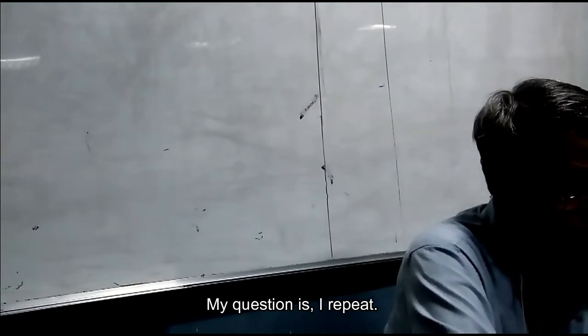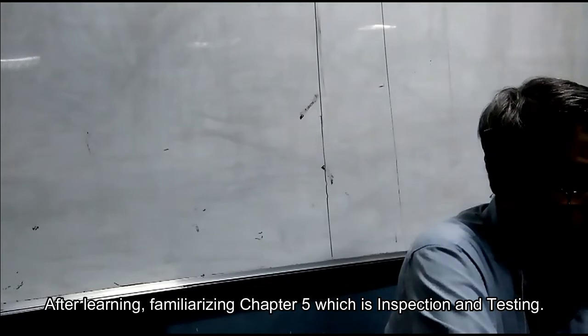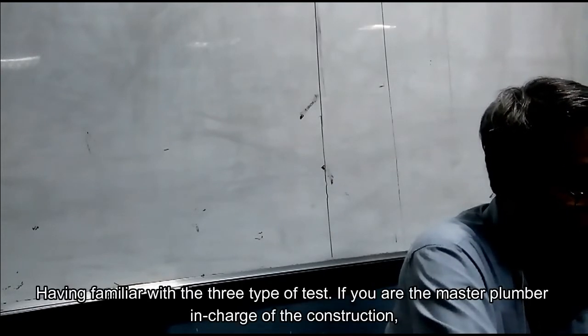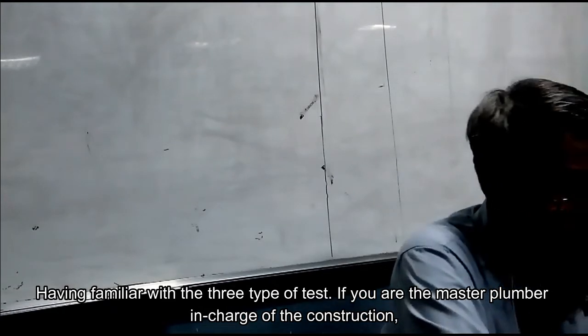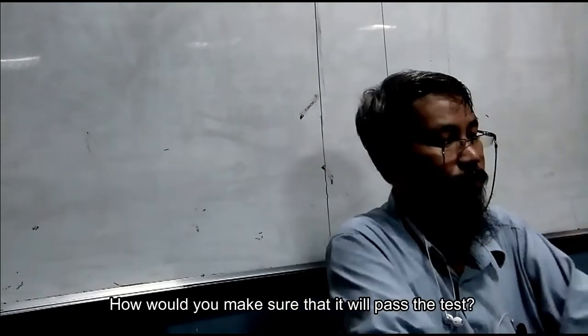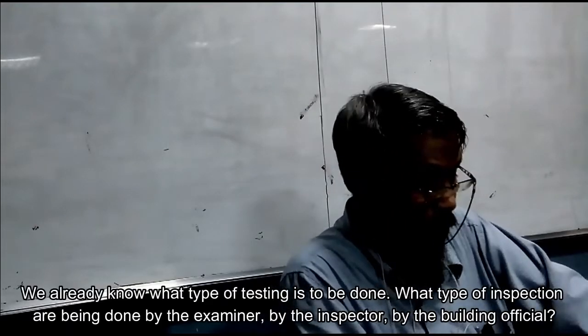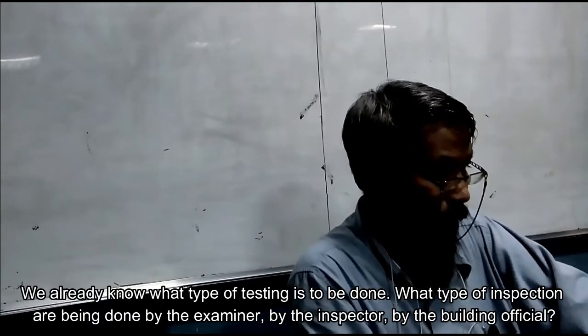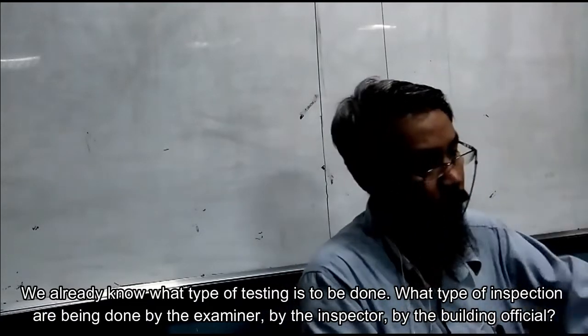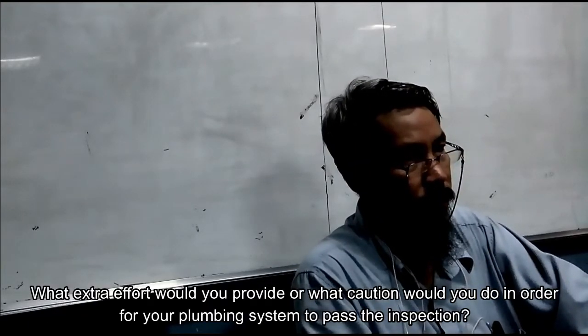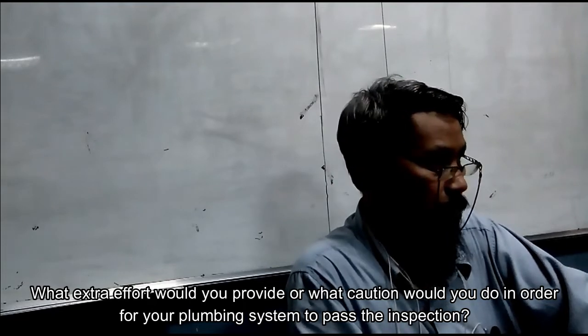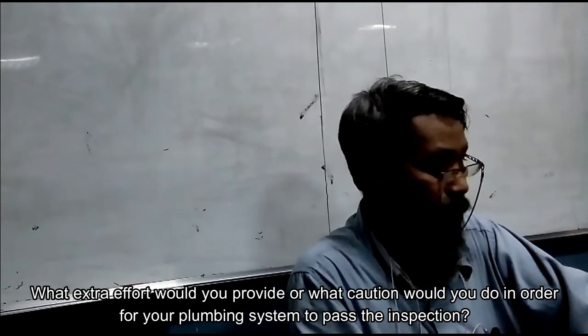So my question is, I repeat, after learning, familiarizing with chapter 5, which is inspection and testing, having been familiar with the three types of tests, if you are the master plumber in charge of construction, how would you make sure that it will pass the test? What extra effort would you provide, or what caution would you do, in order for your plumbing system to pass the inspection?